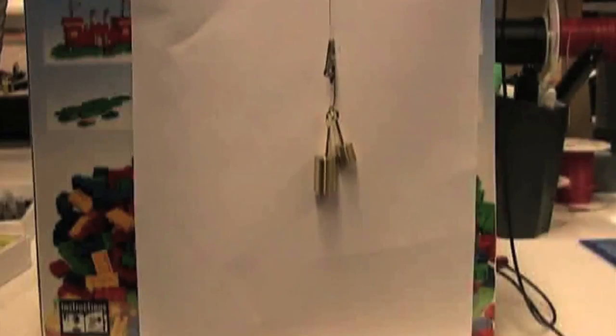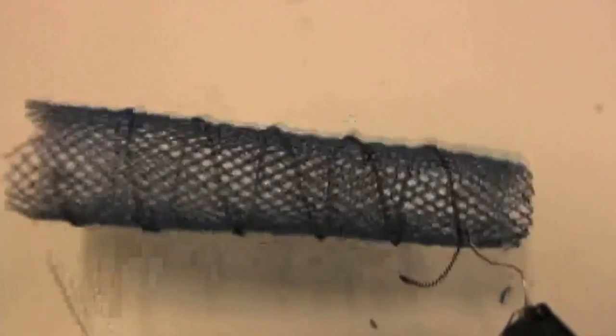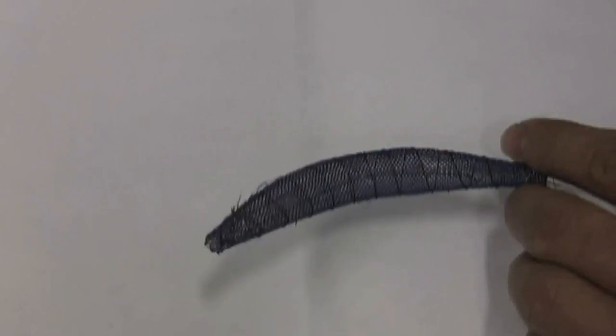Researchers created artificial muscle from wire made of nickel and titanium, a shape memory alloy that stretches and contracts with heat. They wound the wire around the tube, creating segments like that in an earthworm.